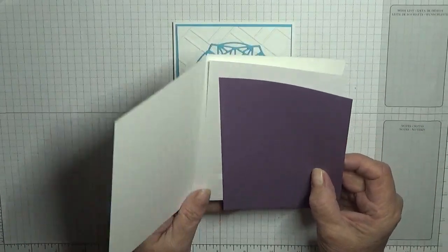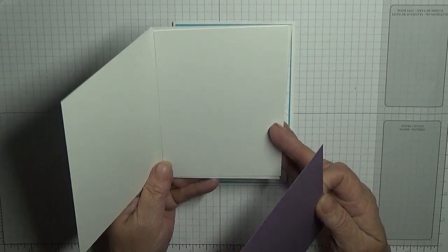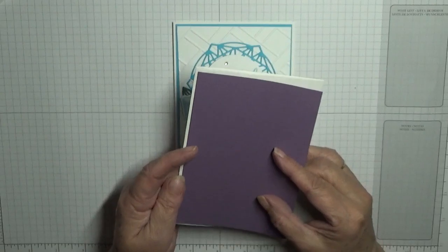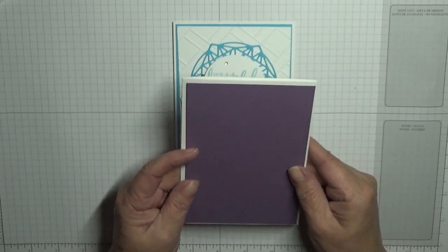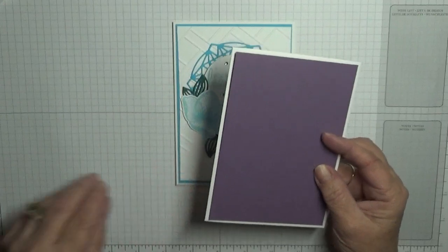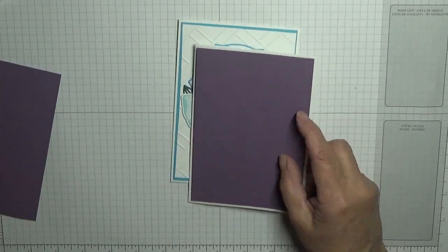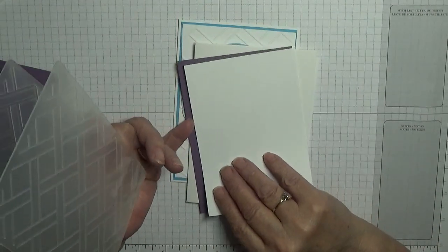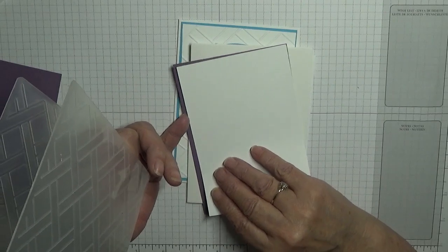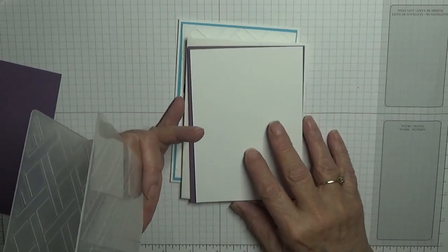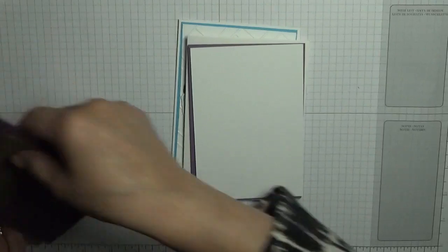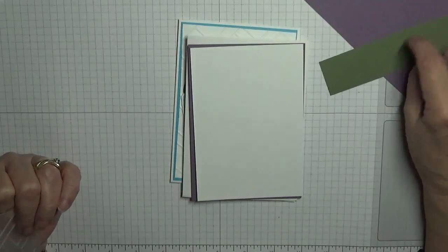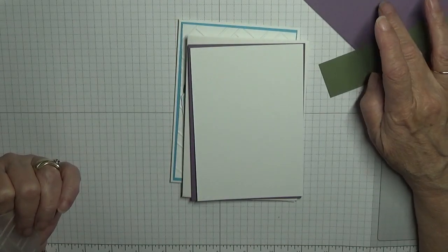You need a piece of white cardstock for the inside at five and five eighths by three and seven eighths, a piece of Perfect Plum at five and five eighths by three and seven eighths, a piece of white cardstock at five and a half by three and three quarters to go over the top, and you also need some scrap Perfect Plum and I've got Mossy Meadow here for the leaves.